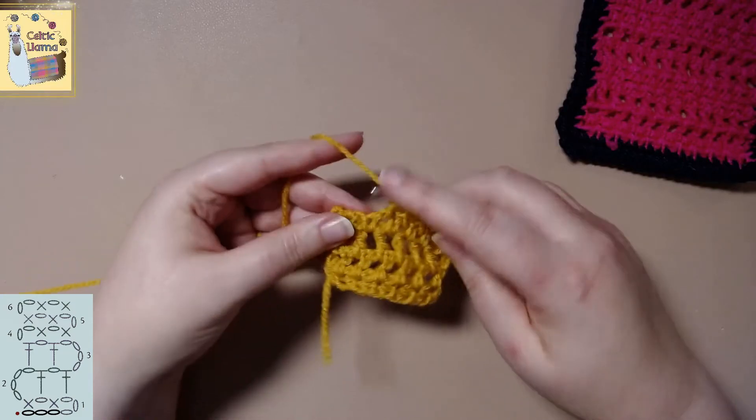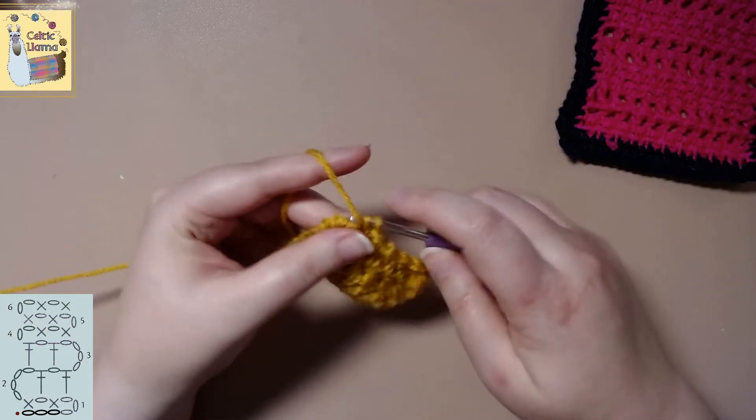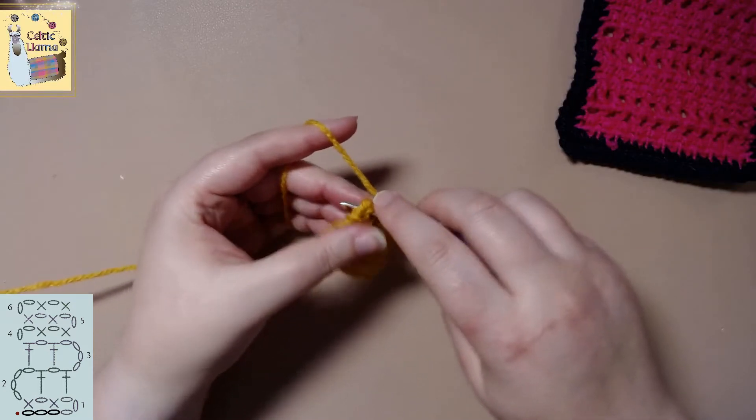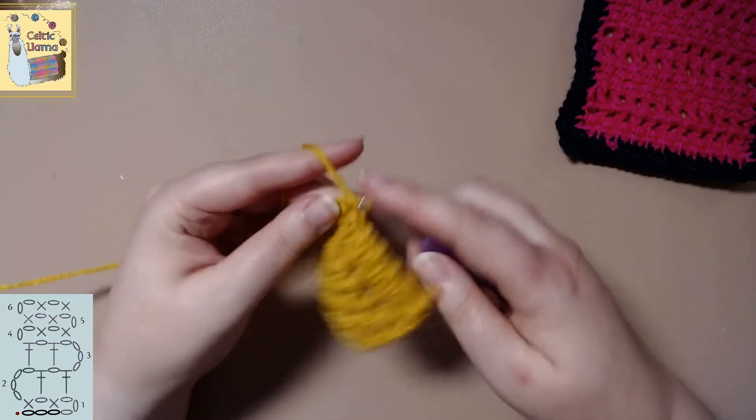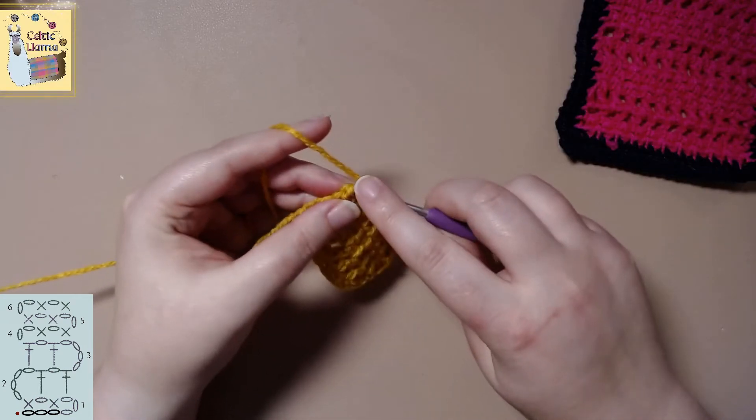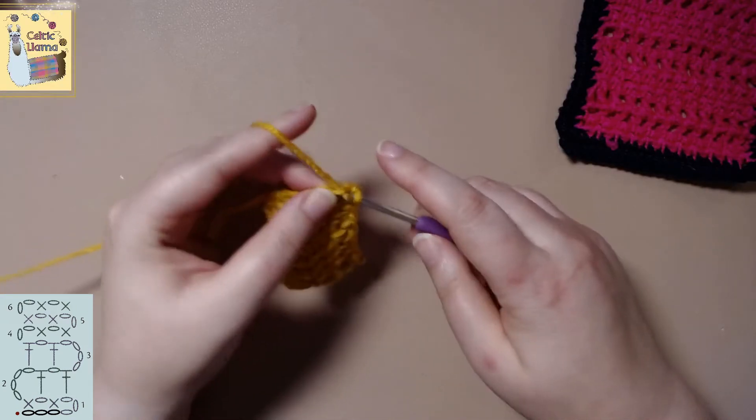So it's a single crochet, chain one, single crochet, chain one. And that's going to be the method through the whole entire project of single crochet or double crochet. But you always want to have that chain one right after you do your stitch.